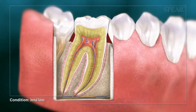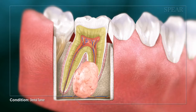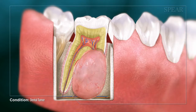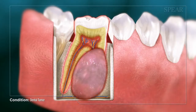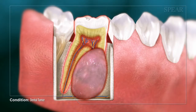Benign tumors are typically slower growing in size. They place pressure on surrounding structures of the mouth but rarely spread to other parts of the body. Malignant tumors are more likely to cause pain and spread to other areas of the body due to abnormal and accelerated cell growth.